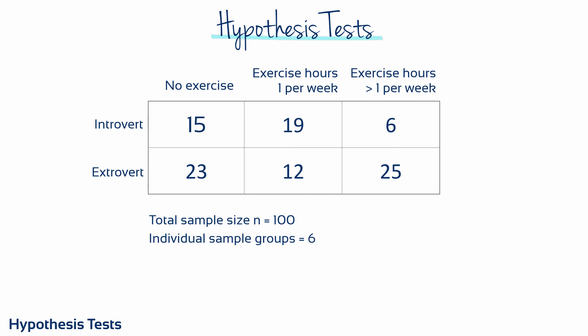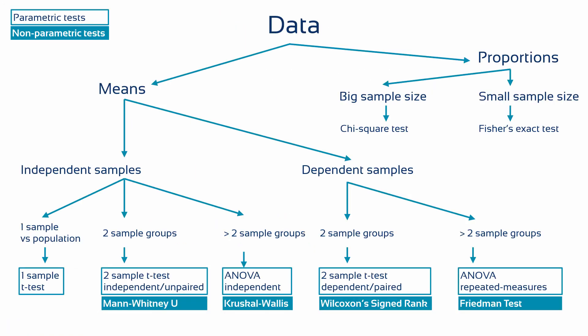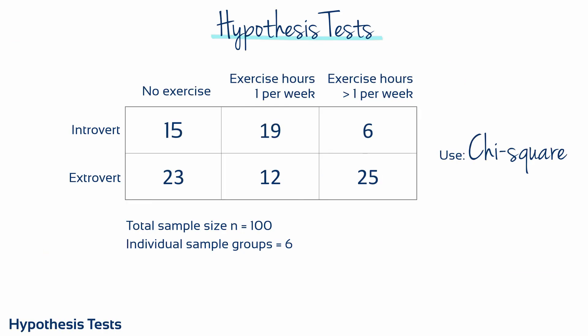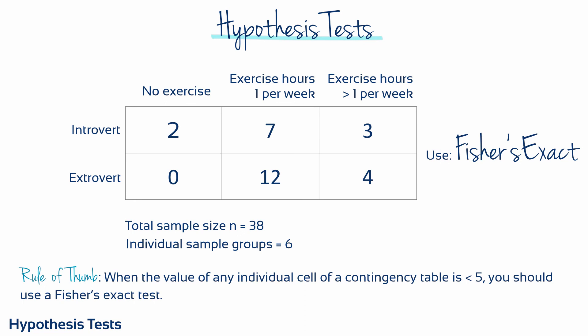For example, if we were investigating whether there's a relationship between extroversion and introversion and the amount of weekly exercise a person gets, we might gather data in a contingency table. We have a hundred study participants proportionally categorized into six cells. The chi-square test can be used for research studies with large sample sizes, whereas Fisher's exact test should be used for small sample sizes. A good rule of thumb: when the value of any individual cell of a contingency table is less than five, you should use Fisher's exact test.